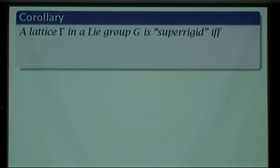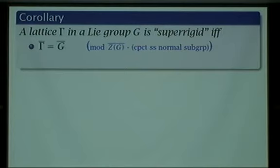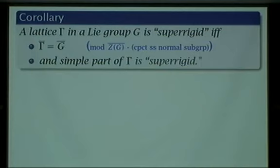That's the basic theory of superrigidity for solvable groups — it's easy to tell whether or not a lattice is superrigid, you just have to check that Gamma is Zariski dense in G. Now let me talk about groups that are not solvable. If you have a lattice in any group G — one that's neither solvable nor simple, so a combination — G has a solvable part and a simple part. The solvable part we know when it's superrigid, and what's left is the simple part. Essentially, if Gamma is going to be superrigid, the Zariski closure has to be right, and the simple part of Gamma has to be superrigid in the simple part of G.